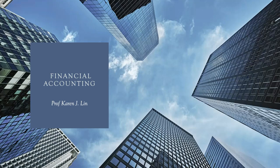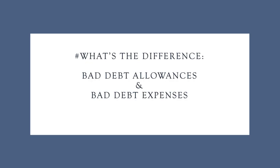Hi, this is Professor Karen Lynn. In this video I'm going to talk about what's the difference between bad debt allowances and bad debt expenses. On the textbook, bad debt allowances has a longer name — it's called the allowances for uncollectible accounts or allowances for doubtful accounts. To simplify, I just call them bad debt allowances and bad debt expenses.